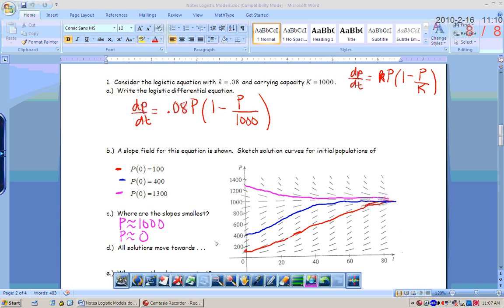All solutions of this graph move towards what y value? 1000, which happens to be your carrying capacity.